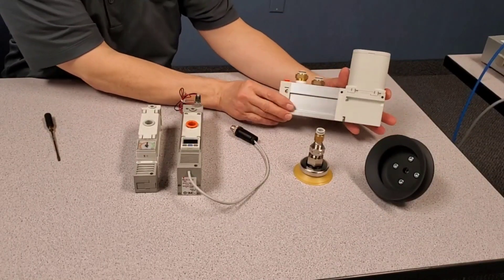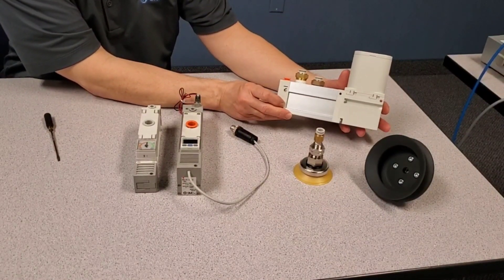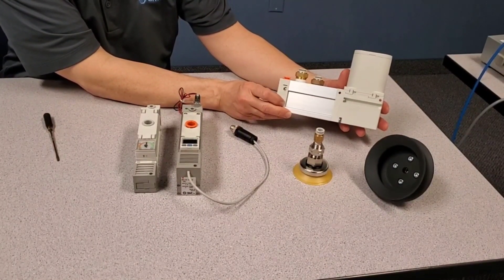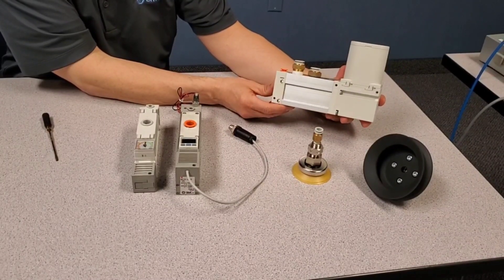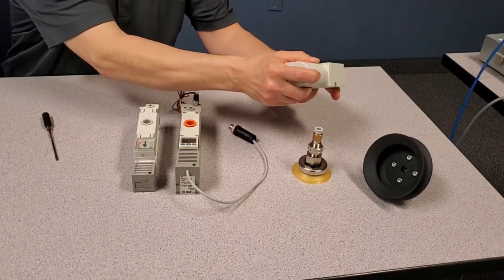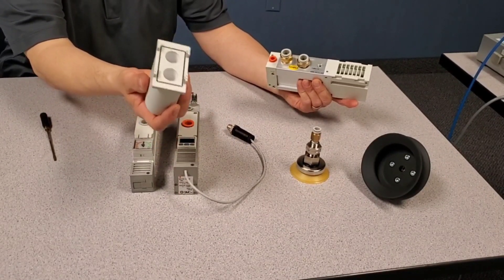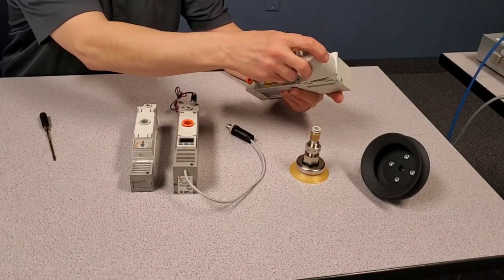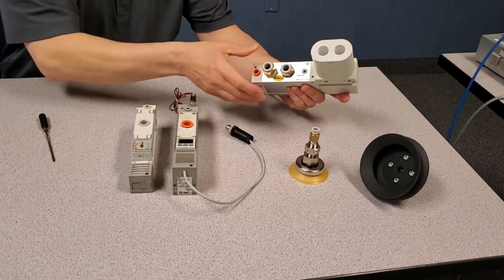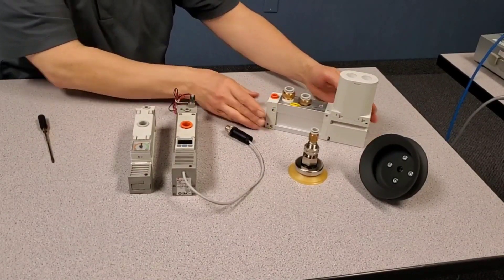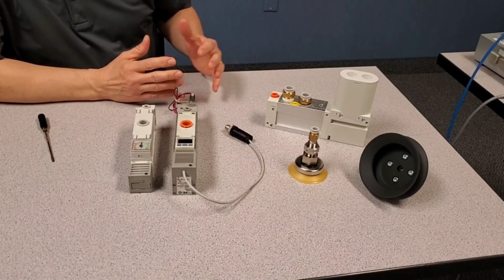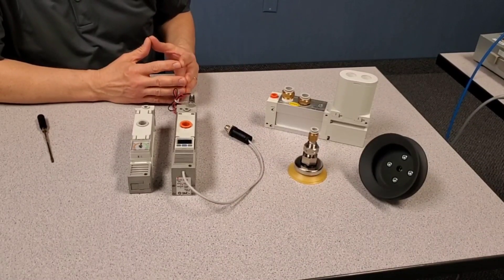Over here is our ZL6, 600 liter per minute Venturi or vacuum pump. Again, a lot of the components are easily maintained. This is our silencer material. Again, weight reduction is a key element of SMC's product development.